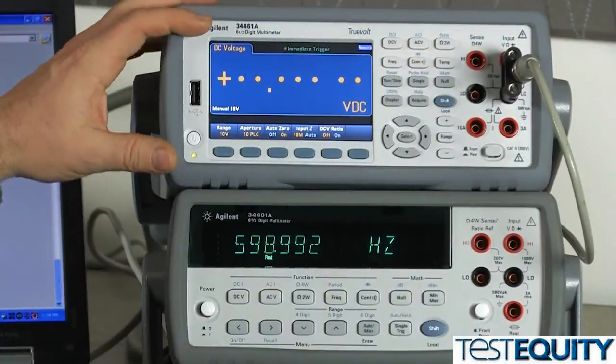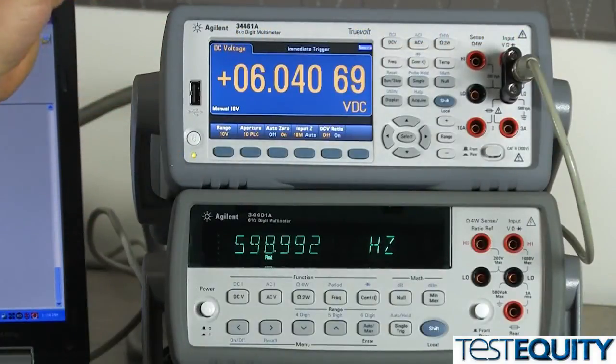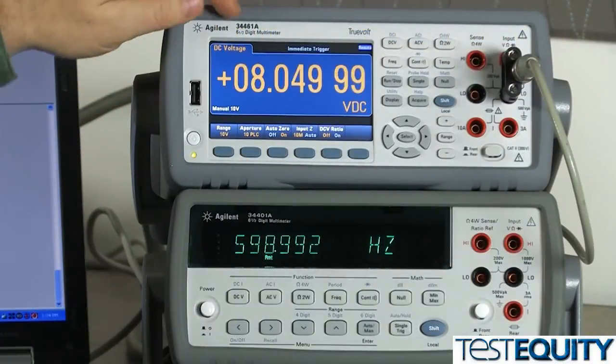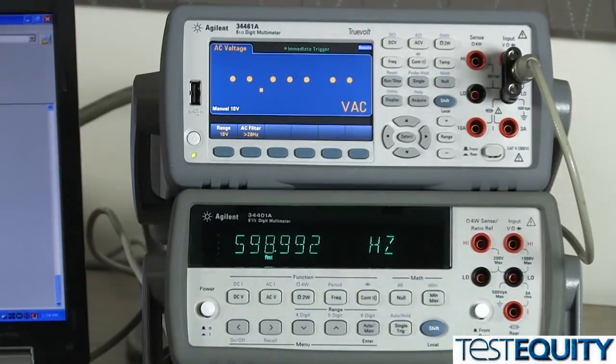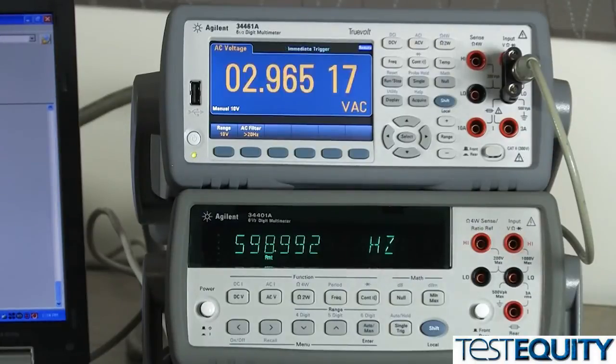There's 4 volts, 6 volts, 5 volts, finally 8 volts DC. Now we'll switch to the AC measurements, that was 1 volt, 2 volts, 3 volts, 4 volts, and finally 5 volts AC.